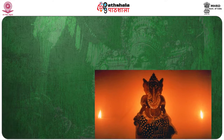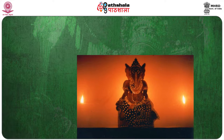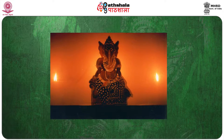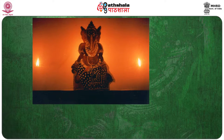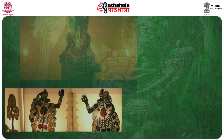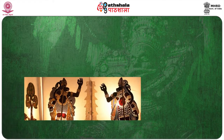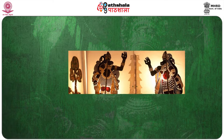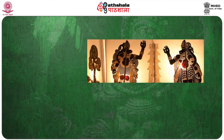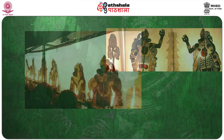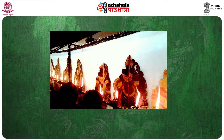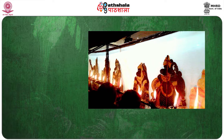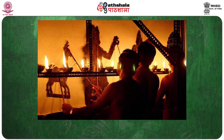Tol Pava Kuthu originated in the Palakkad district of Kerala. As a part of the ritualistic worship of the goddess, it is performed in the temples of Bhagavati or Bhadrakali. Tol means leather, Pava is a puppet and Kuthu is a play — thus Tol Pava Kuthu means performance or play with puppets made of leather. The Ramayana is the theme of Tol Pava Kuthu, with the majority of stories from the Kamba Ramayana. Performers have often added stories, episodes, explanations and dialogues to the original text, and the actual performance allows improvisation.